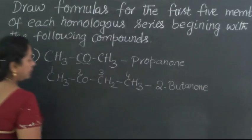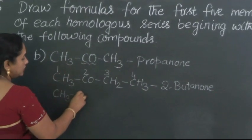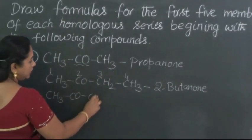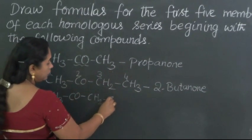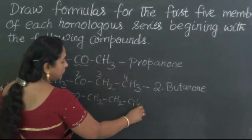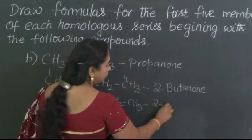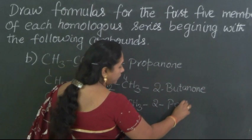The next member would be CH2 added to this: CH3-CO-CH2-CH2-CH3. So again for the second carbon atom it is the ketone. So 2-pentanone.